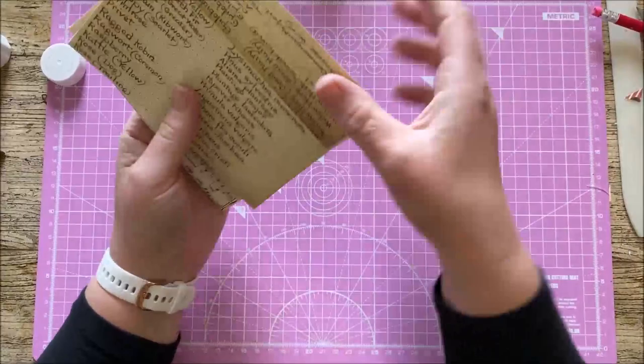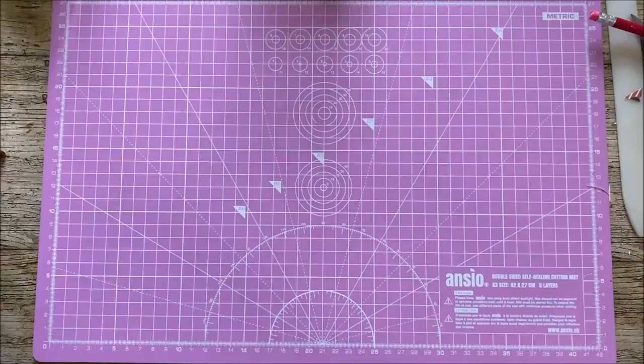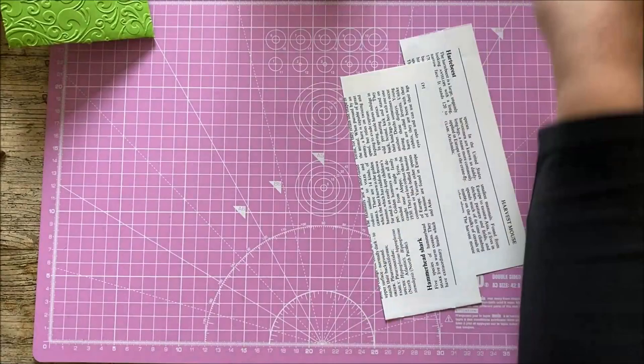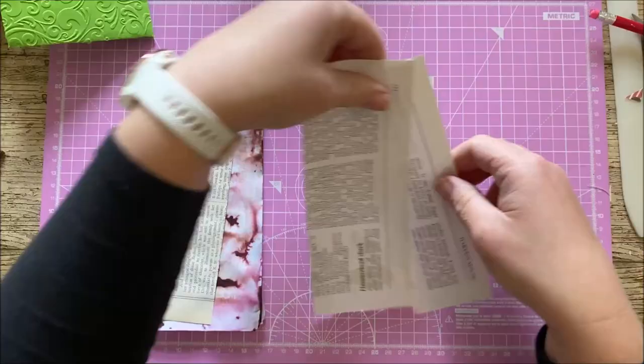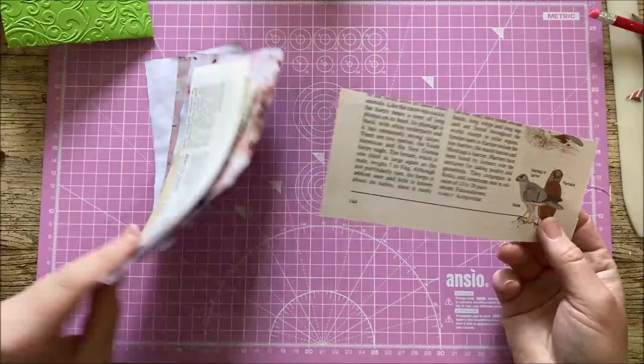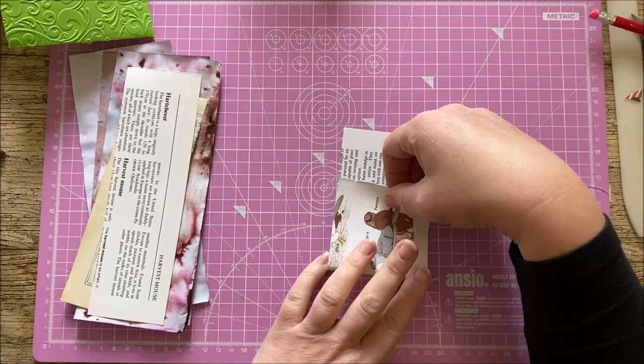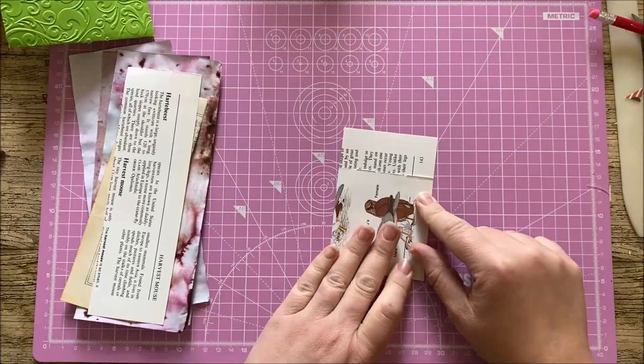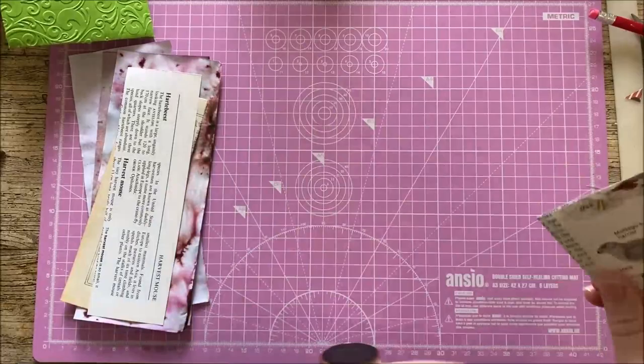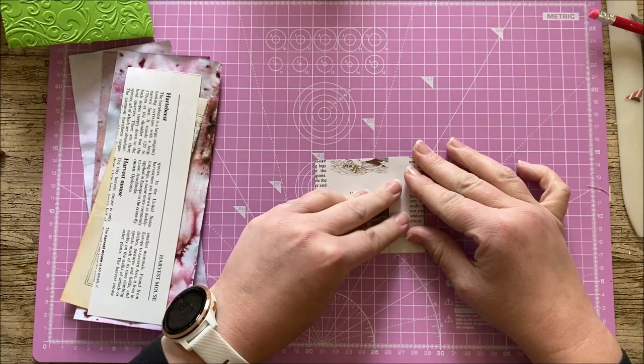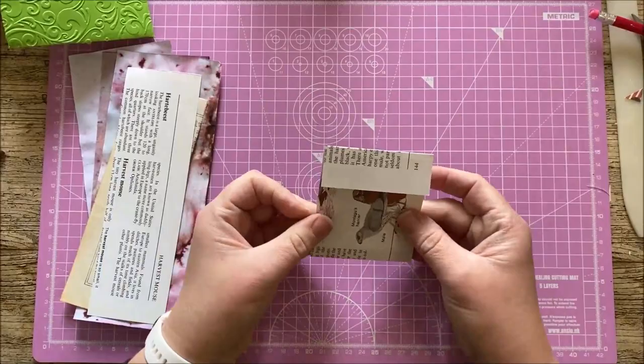And then the last one and probably the easiest one, perhaps I should have started with this one really. When you're making your squares to make the first shape envelope, you're going to end up with lots of pieces of paper left over. So you can use these pieces of paper to make another style of envelope. Basically, if there is anything interesting on the paper as well, try to incorporate that if you can with where you fold it. So there's a nice little picture there. I'm going to try and bring that up here.